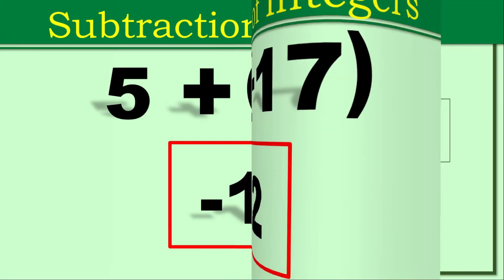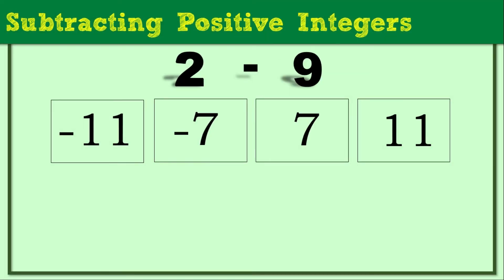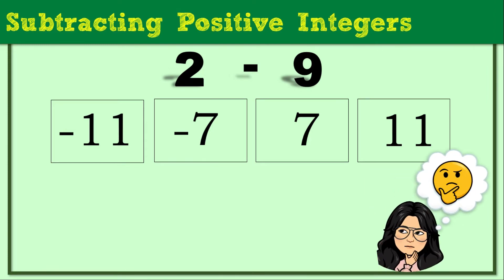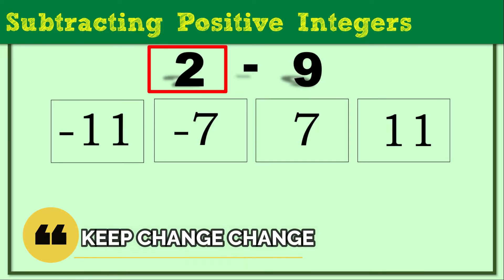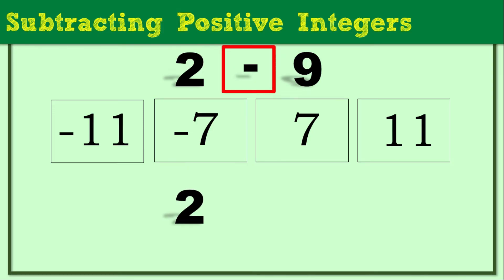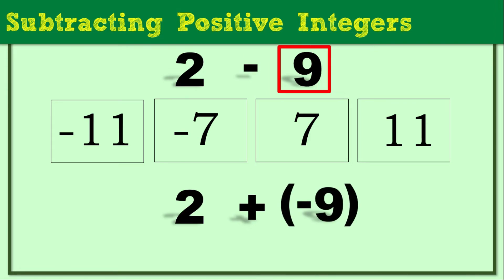Let's have another example. How about 2 minus 9? What do you think is the answer — negative 11, negative 7, 7, or positive 11? Using Keep, Change, Change: we keep positive 2, change the minus to plus, and change positive 9 to negative 9. So we have 2 plus negative 9. The answer is negative 7.